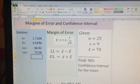I am 90% confident that the mean of this population is between 66.92 and 73.08.